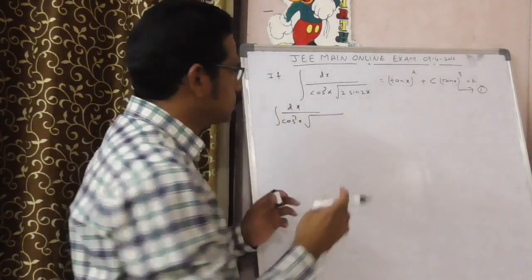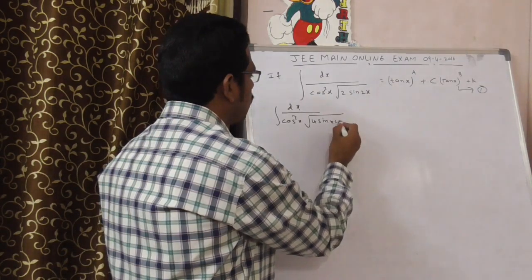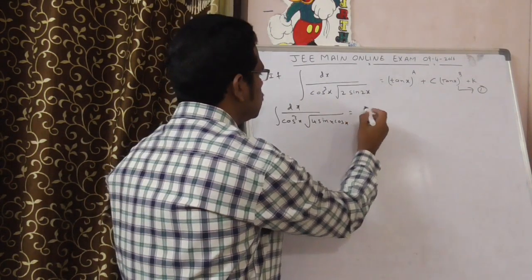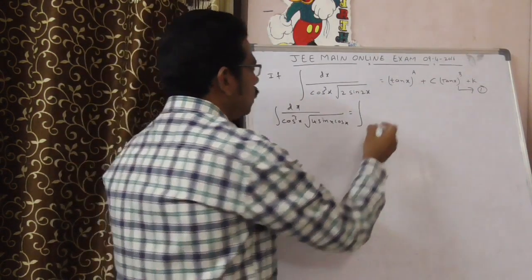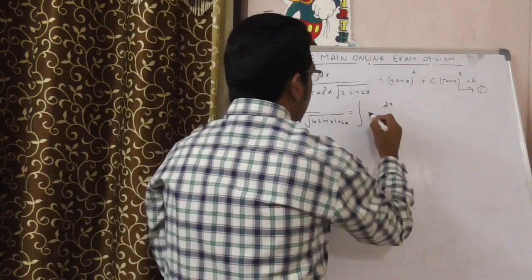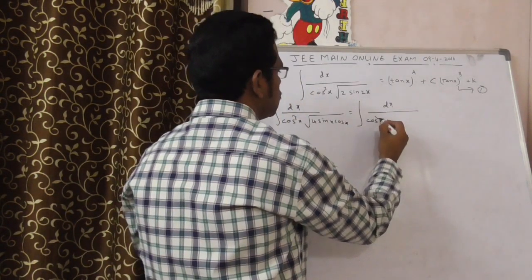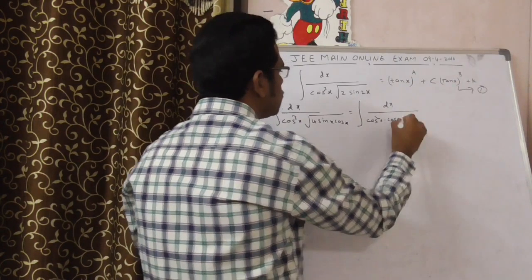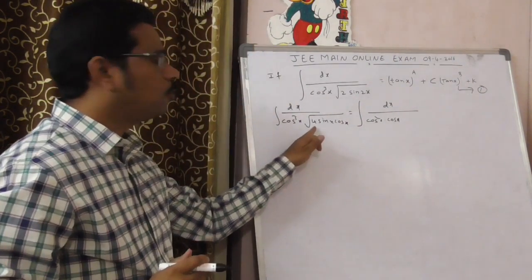2 sin x cos x times 2, that is 4 sin x cos x. This is equal to integral dx by this cos cube x, I am writing it as cos square x of cos x. This root 4 is 2.